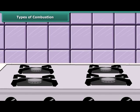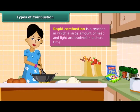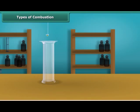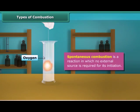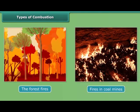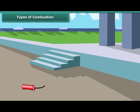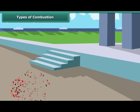Let us now look at types of combustion. LPG burns quickly producing a lot of heat — this type of combustion is called rapid combustion. When white phosphorus is left in the open for some time, it catches fire on its own — this is called spontaneous combustion. Other examples of spontaneous combustion are forest fires and fires in coal mines. When a cracker burns, it produces a large amount of heat, light, and sound — this type of combustion is called explosion.